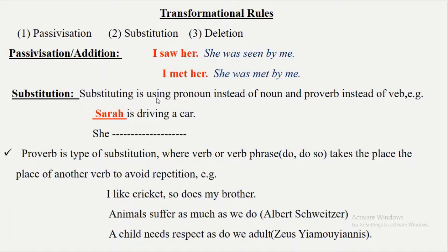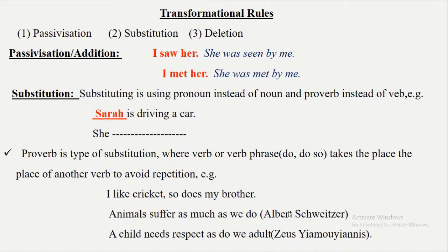The second rule is substitution — using a pronoun instead of a noun, and a pro-verb instead of a verb. A pro-verb is a type of substitution where a verb or verb phrase is replaced by 'do' or 'do so' to avoid repetition. For example: 'Sarah is driving a car' becomes 'She is driving a car' — we replaced the noun 'Sarah' with the pronoun 'she.' As for pro-verbs: 'I like cricket, so does my brother.' 'Animals suffer as much as we do.' Here we replace verb phrases with 'do' and 'do so.'